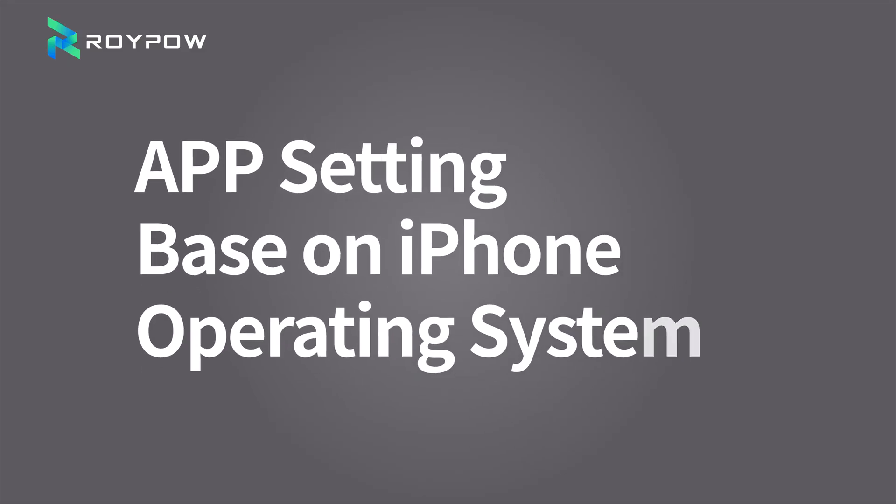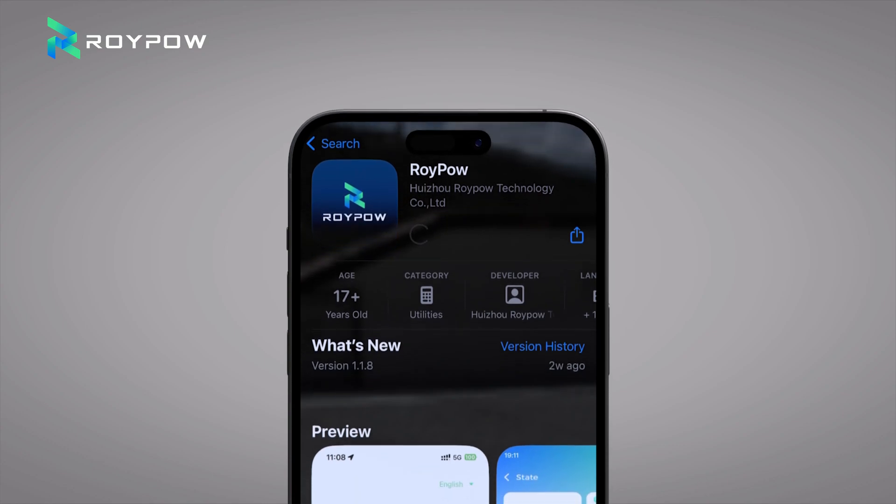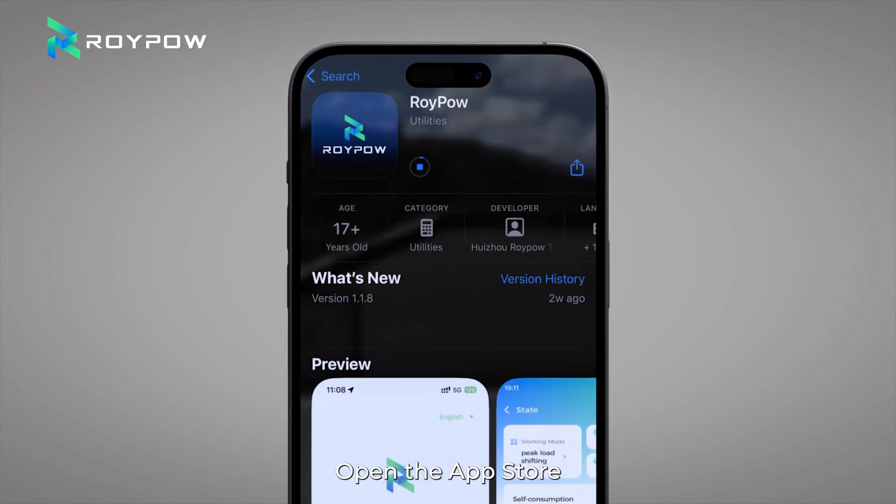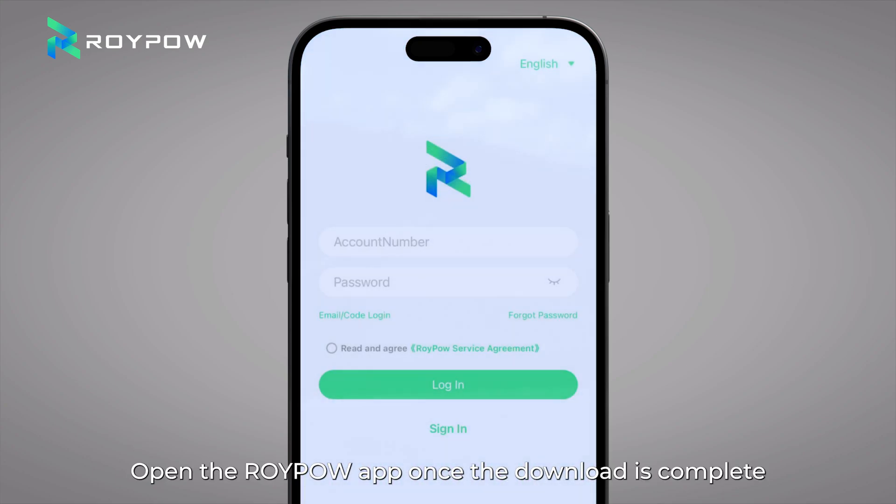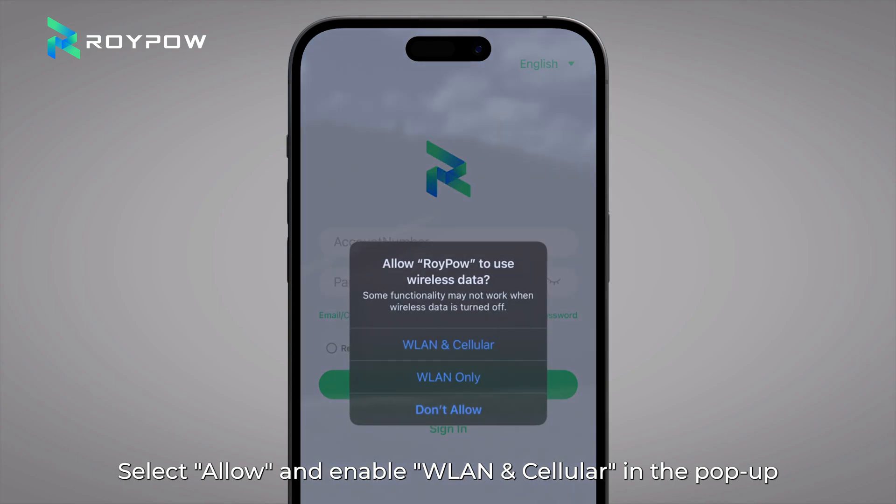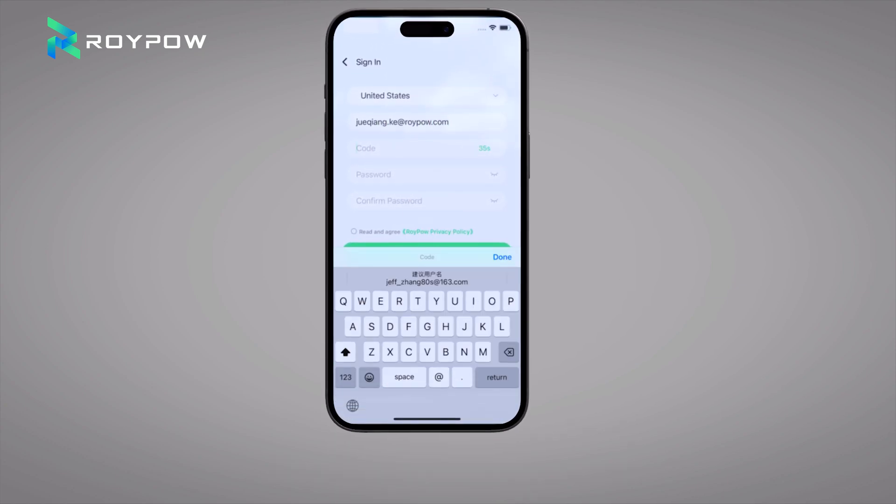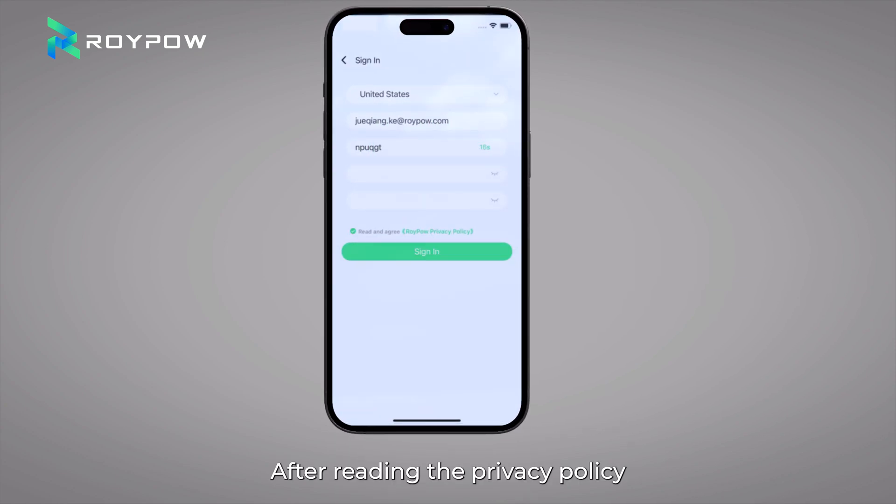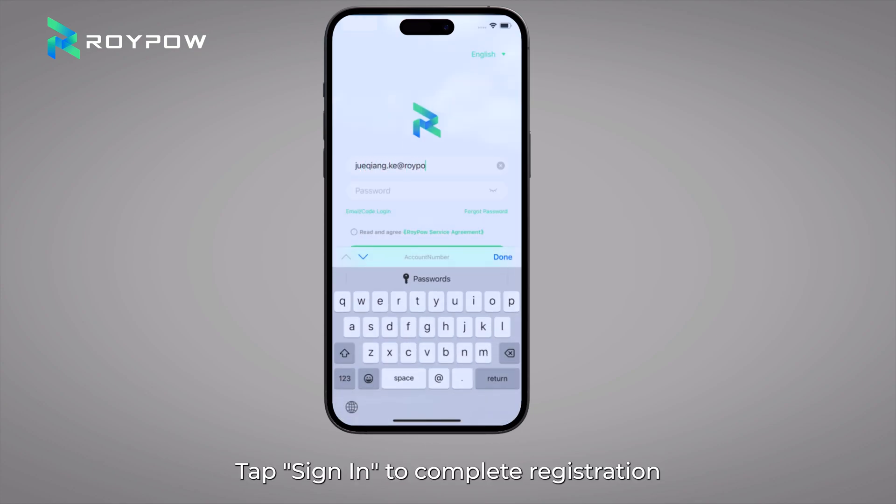App setting. Based on iPhone operating system. Open the App Store. Search for ROYPOW and download the app. Open the ROYPOW app once the download is complete. Select allow and enable WLAN and cellular in the pop-up. Tap sign in. Enter information as prompted. After reading the privacy policy, tick to agree. Tap sign in to complete registration.